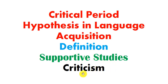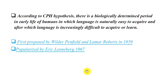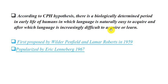According to the critical period hypothesis, there is a biologically determined period in early life of humans during which language is naturally easy to acquire, and after which language is increasingly difficult to acquire or learn. The critical period hypothesis was first proposed by Wilder Penfield and Loma Roberts in 1959.